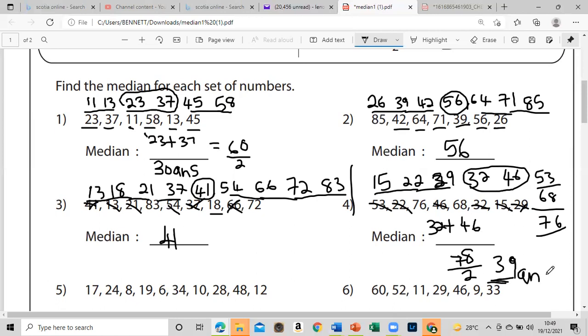Leave this one in the comment section, these two. Find the median of these numbers: 17, 24, 8, 19, 6, 34, 10, 28, 48, and 12. And number six: 52, 11, 29, 46, 9, and 33. Thank you guys so much for being a part of this, the Jenaex Bennett channel. Jenaex Bennett appreciates you all. See you guys in another video. This is Mr. Bennett, I'm out.